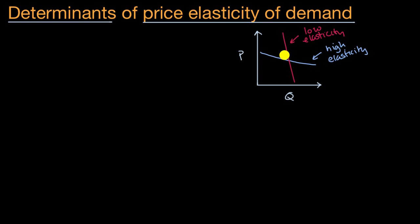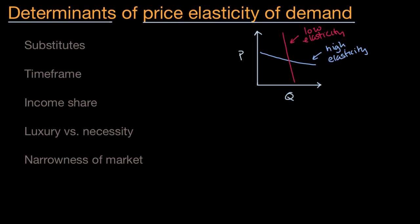In other videos we even think about a perfectly inelastic market, in which case you would have a vertical demand curve. Now let's think about the factors that might lead us to be closer to the high elasticity case or the low elasticity case. The factors that economists generally point to are: substitutes, time frame, income share, whether the market is about a luxury or a necessity, and the narrowness of a market.